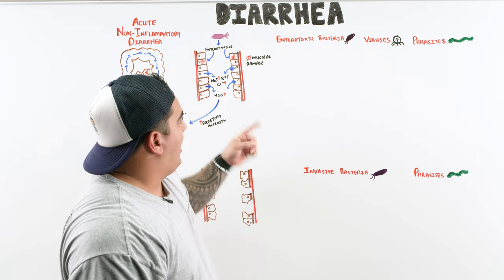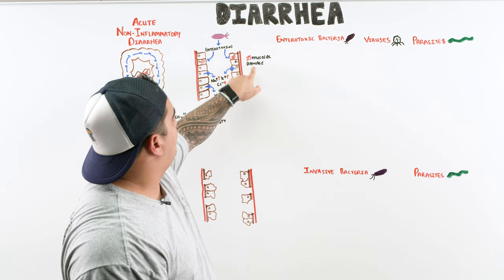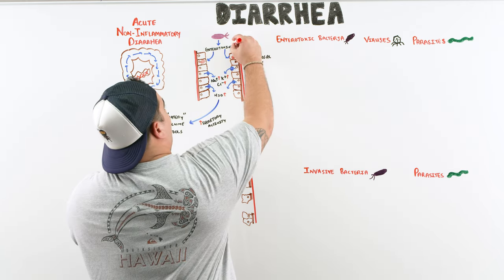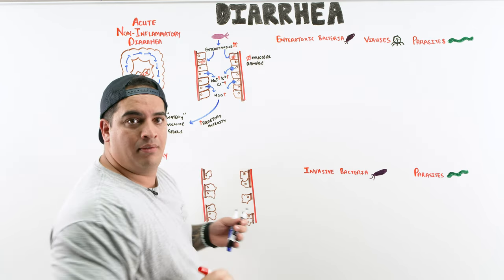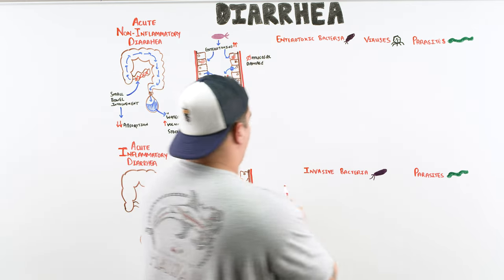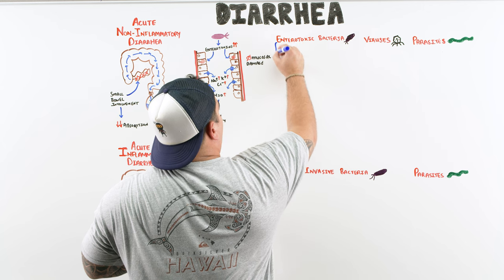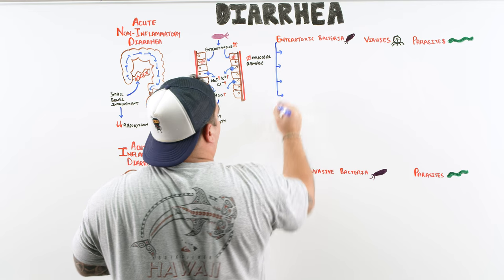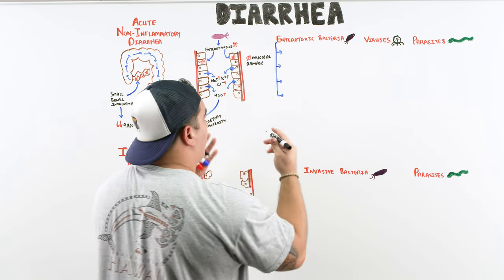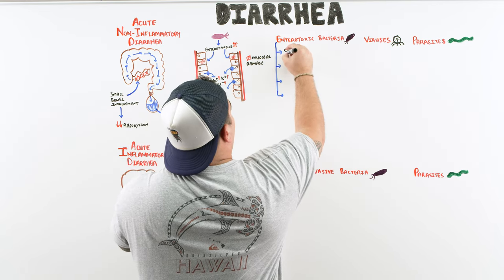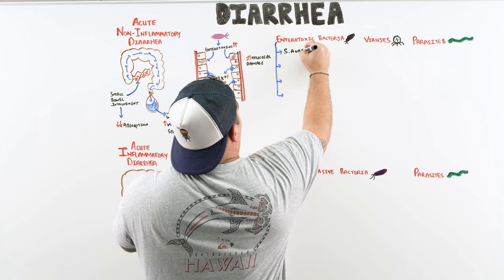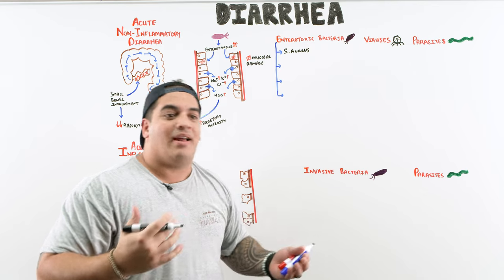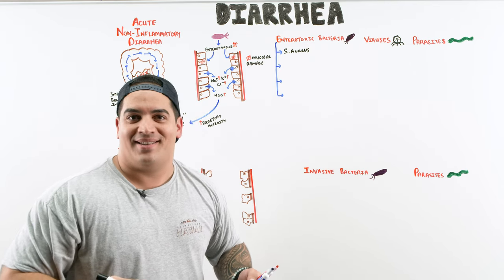So these enterotoxins come from pathogens. Let's go through the key ones to remember. First is Staphylococcus aureus — think about picnics. Foods rich in mayonnaise like potato salad sitting out in the hot sun can be a nidus for S. aureus. It releases preformed toxins, causing bad vomiting and diarrhea quickly.